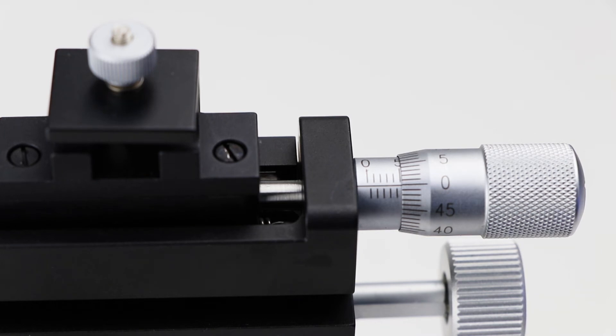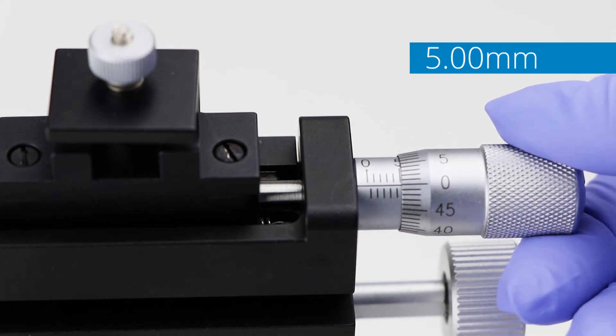Here, the zero mark on the rotational scale lines up exactly with the center line on the linear scale. We have a measurement of exactly 5.00 millimeters.